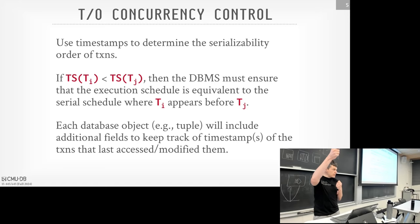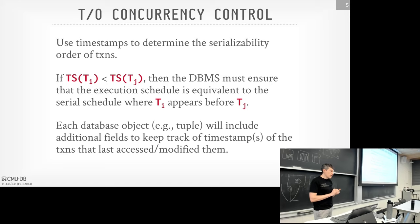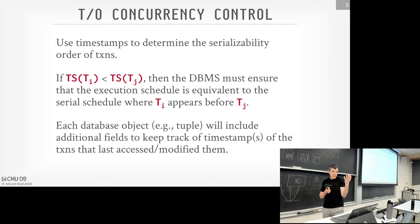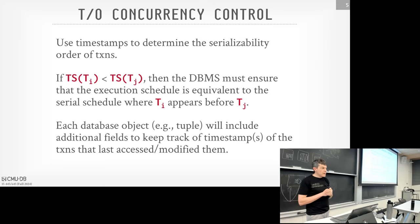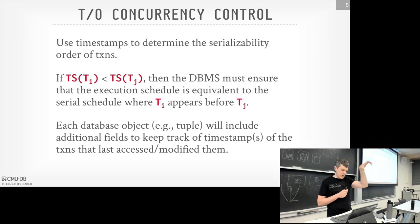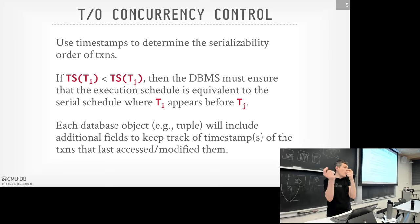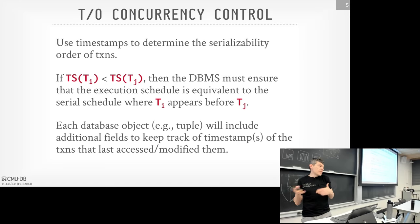Timestamps are going to permeate all throughout the system. We're going to assign timestamps to transactions, and we're also going to assign timestamps to objects in our database — meaning for every single tuple, for example, we'll have a timestamp corresponding to the last time a transaction accessed or modified it. We also can store timestamps in the tuple header to keep track of what was the timestamp of the transaction that created this object or last updated it.